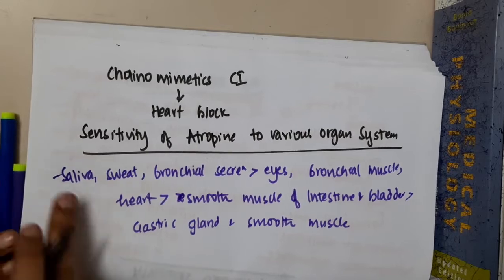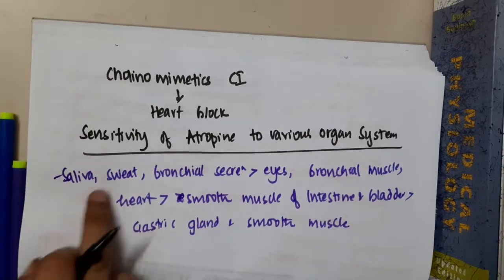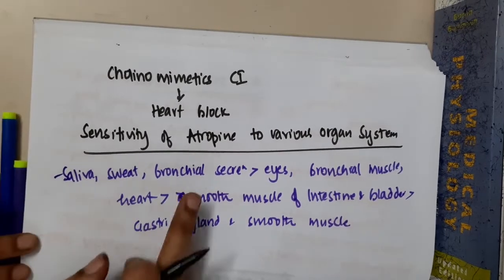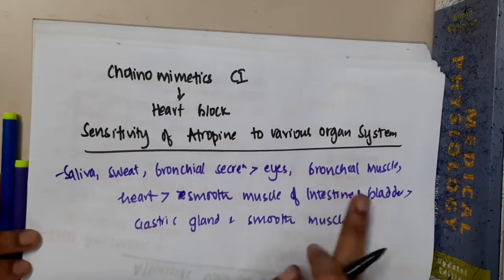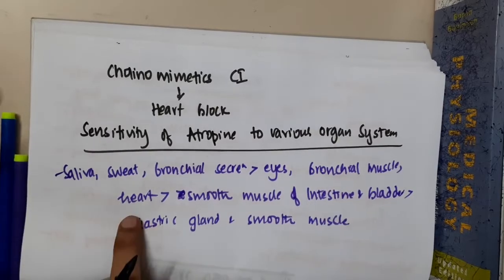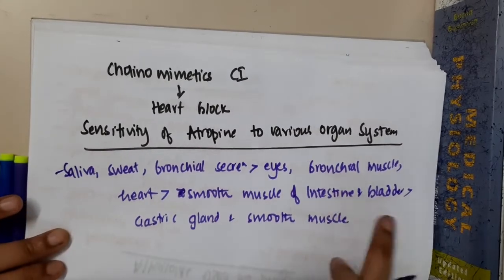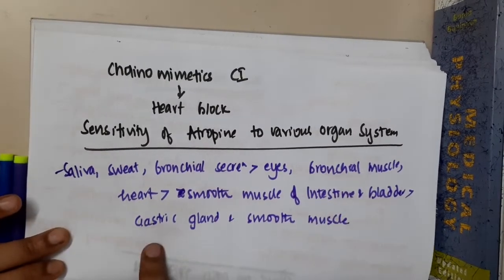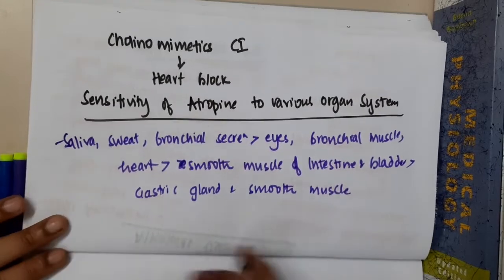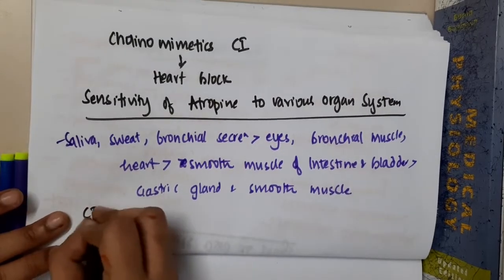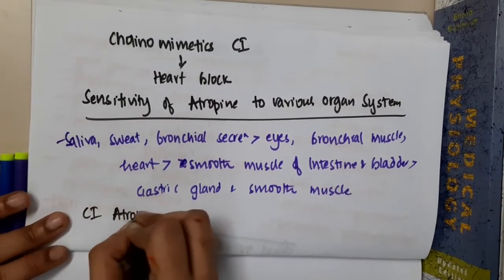So atropine's highest sensitivity is seen in saliva and sweat, then bronchial secretions, then eyes, bronchial muscles and heart, then smooth muscles of intestine and bladder, and finally gastric glands and smooth muscles.